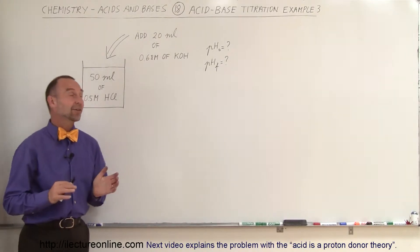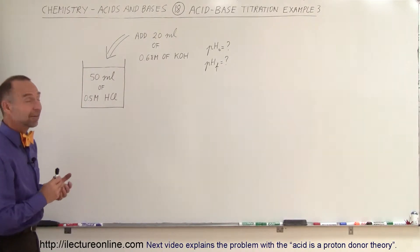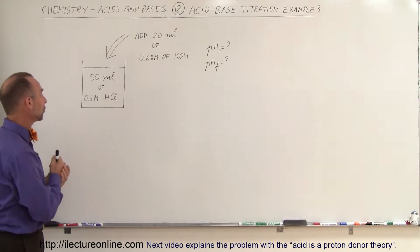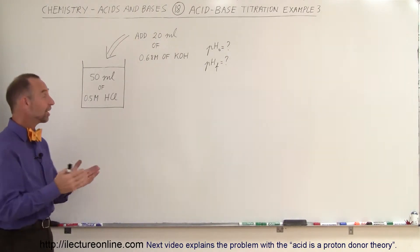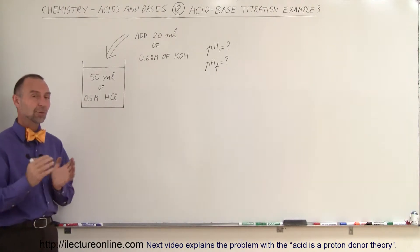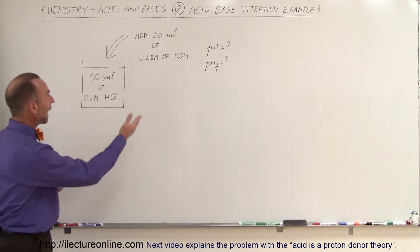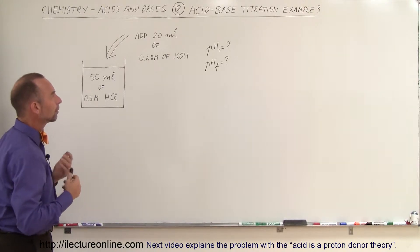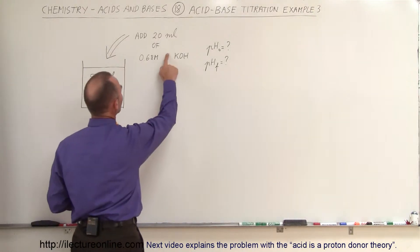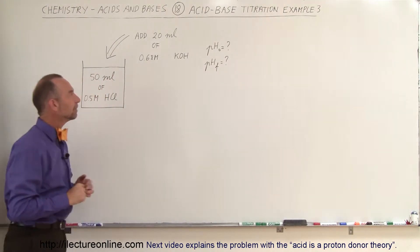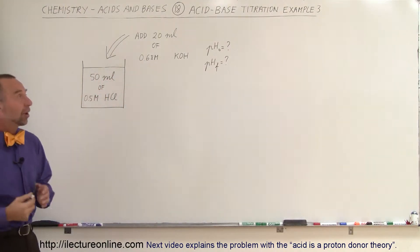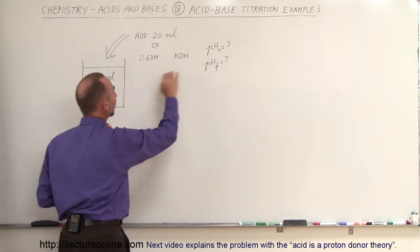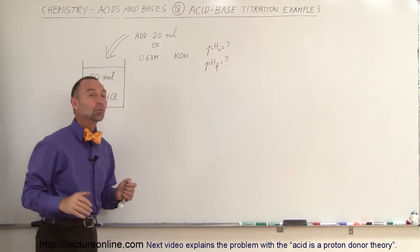Welcome to ElectronLine. Here's a more challenging acid-base titration problem. We start with 50 milliliters of 0.5 molar hydrochloric acid, and we're going to add 20 milliliters of 0.68 molar potassium hydroxide. The questions are: what was the original pH of the solution, and what is the final pH of the solution after adding the potassium hydroxide?